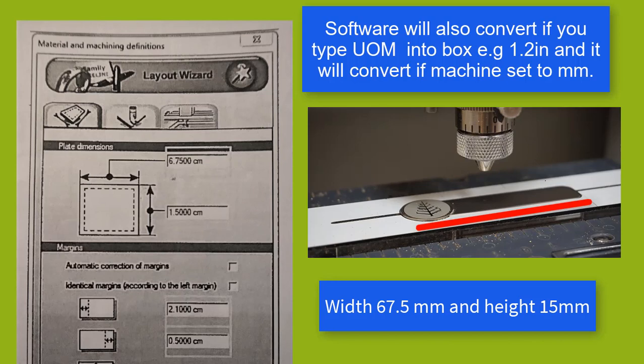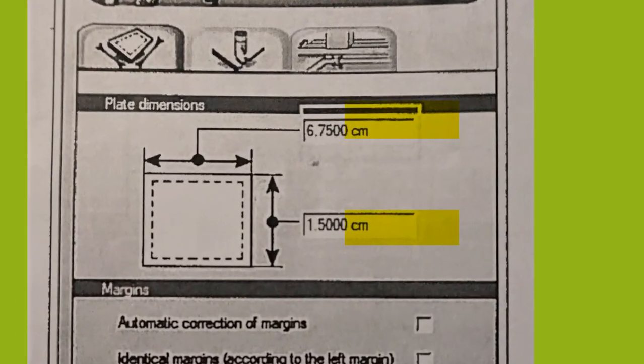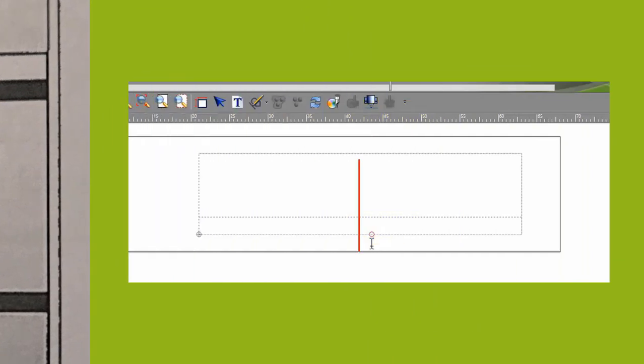I entered the dimensions of the badge in millimetres, 67.5 millimetres across and then 15 millimetres height. Key under plate dimensions, remember this defines the whole badge size.